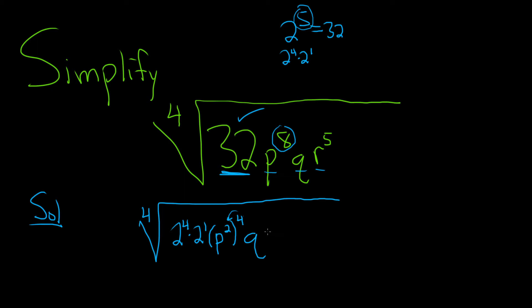And r to the fifth is not so tough. We can write it as r to the 4 times r to the 1. That's, again, because we add the exponents when we multiply things with the same base. So 4 plus 1 is equal to 5.